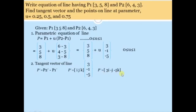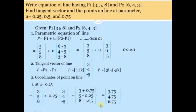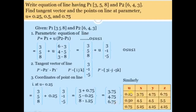Now we find the coordinates of points on the line. At u = 0.25, substituting into the equation: [3, 5, 8] + 0.25 × [3, −1, −5] gives the point (3.75, 4.75, 6.75). So the coordinates of point P at u = 0.25 are (3.75, 4.75, 6.75).